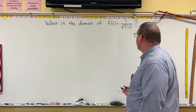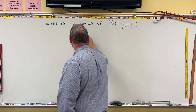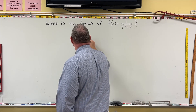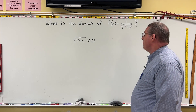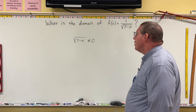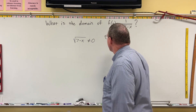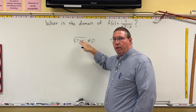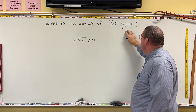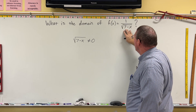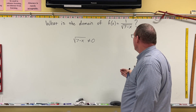To identify the domain of this function, we know that the denominator cannot equal zero. So we'll say that the square root of 7 minus x cannot equal zero. We also need to include the domain of the square root function, because we can't violate the rules of the rational function, but we also can't violate the rules of the square root function.